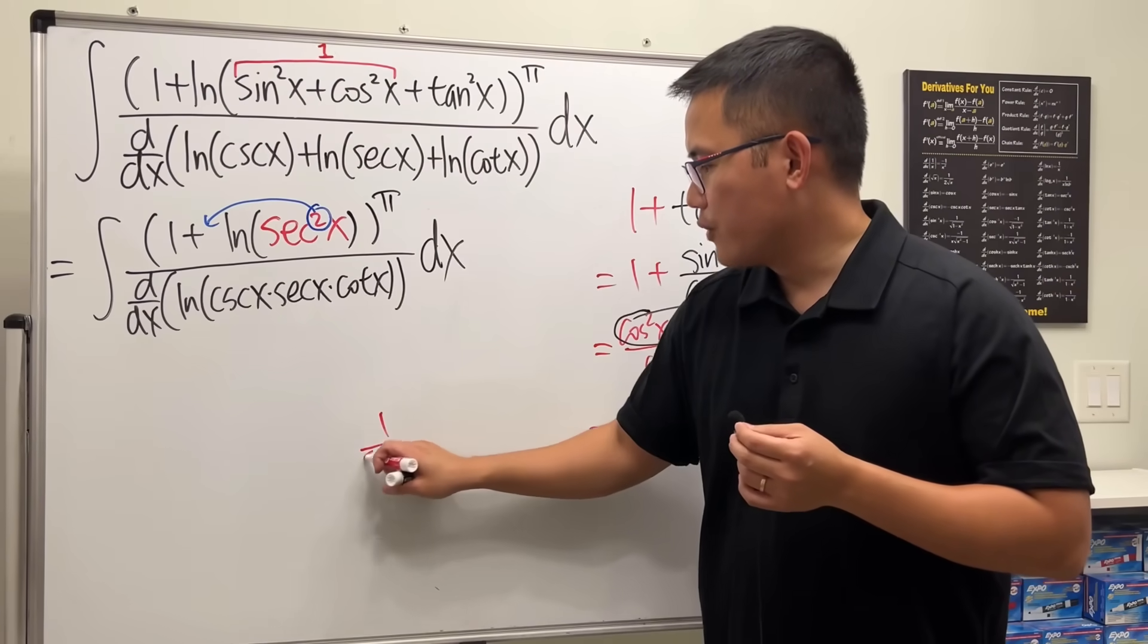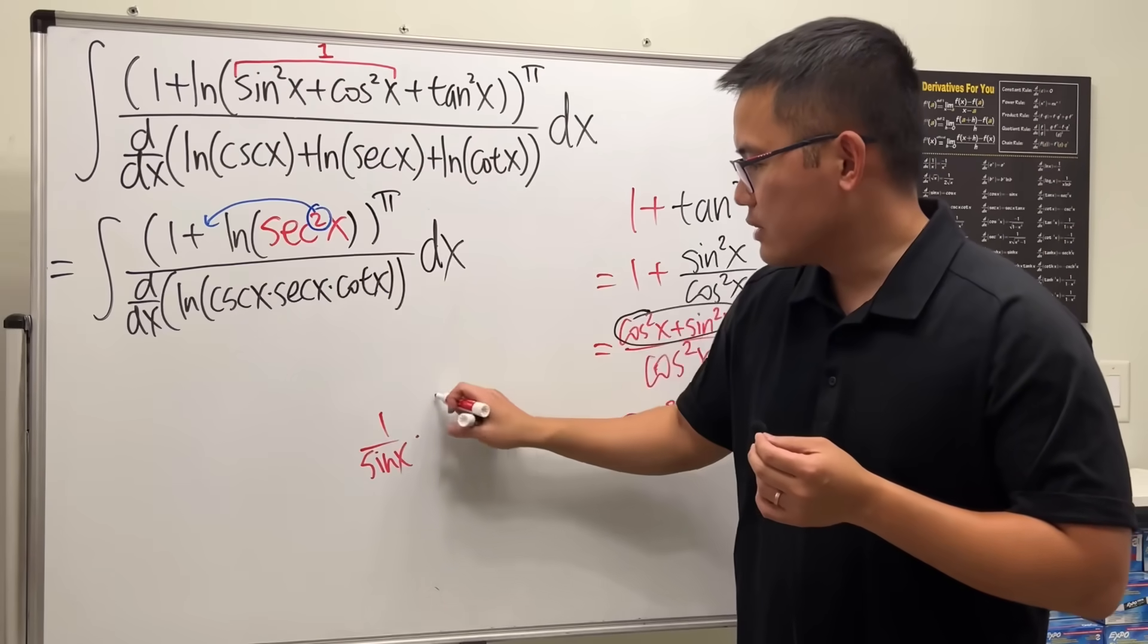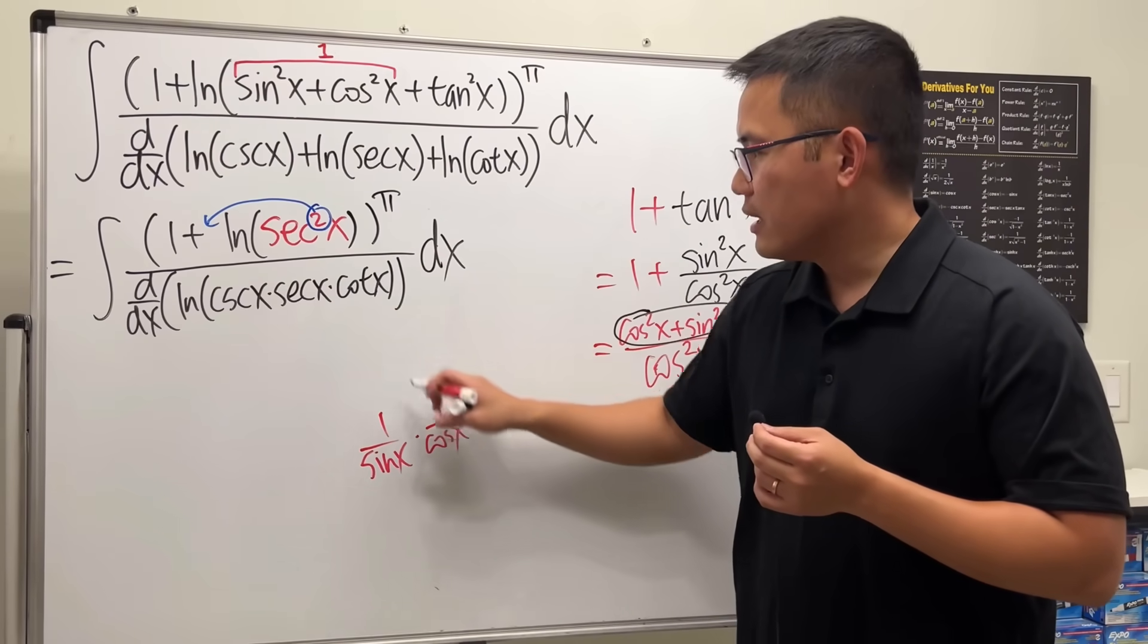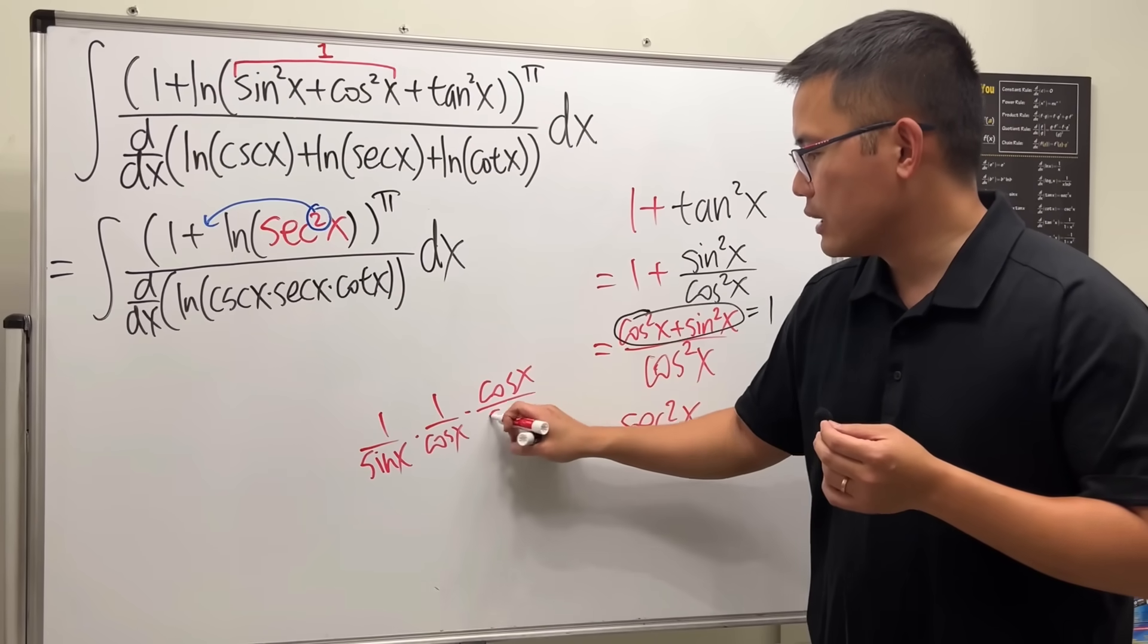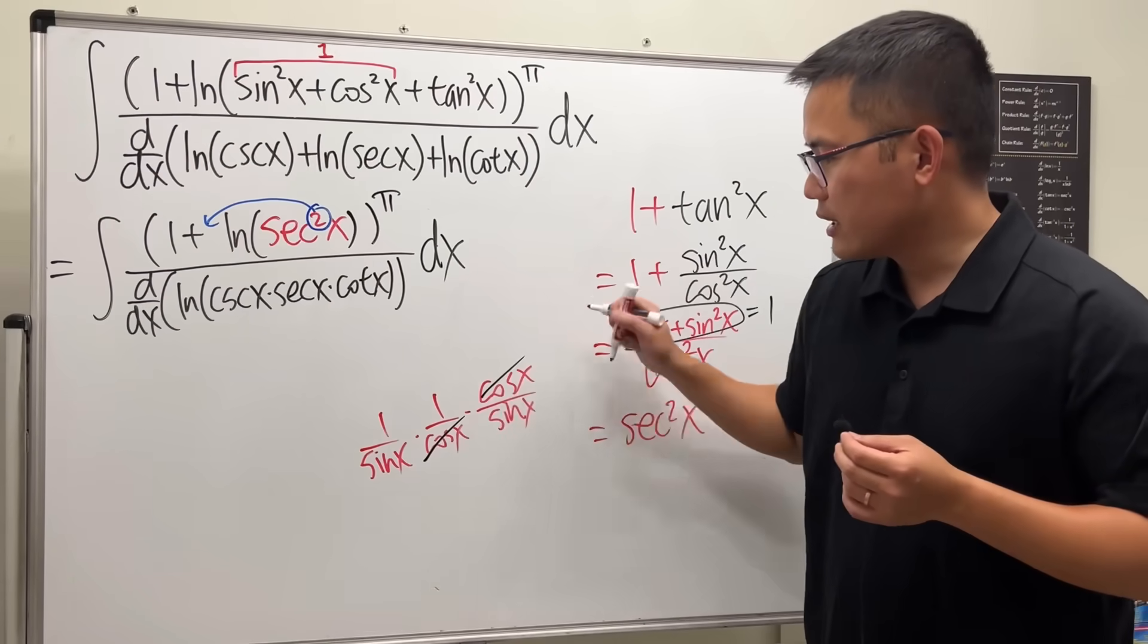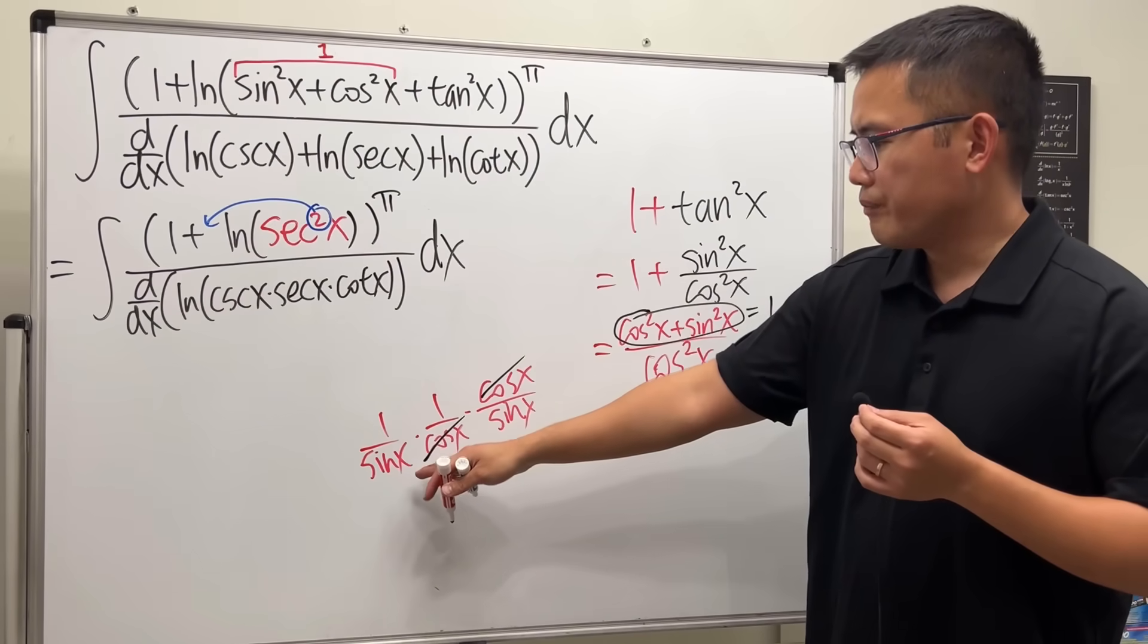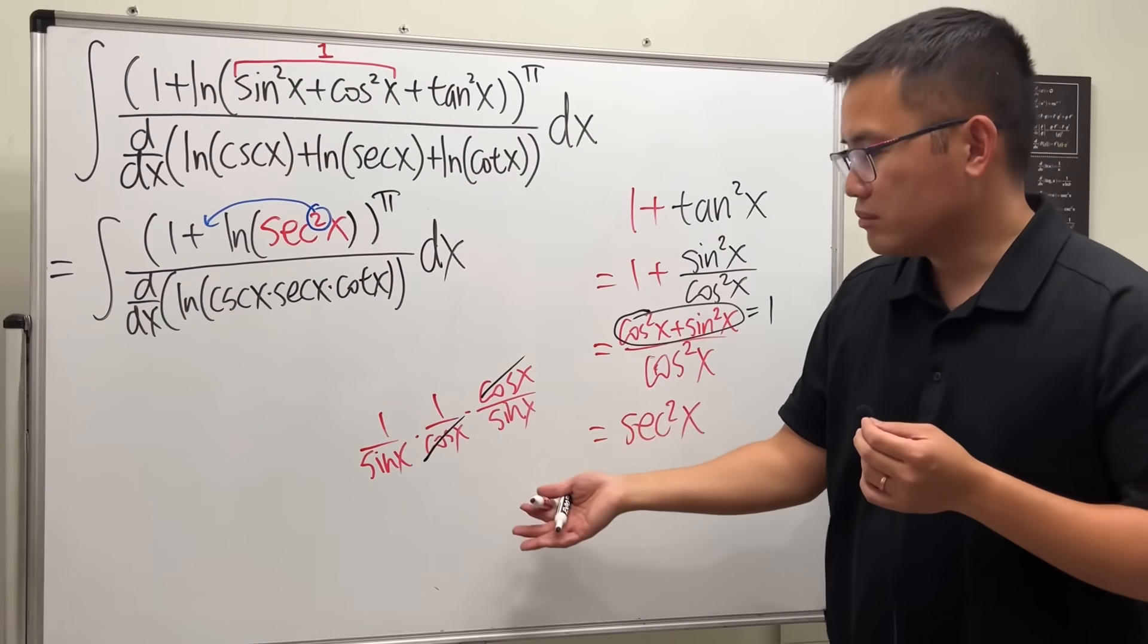This is just 1 over sine for cosecant, and then for secant, it's 1 over cosine, and then this is cosine x over sine x for cotangent. Cosine, cosine, cancel, so really, we just have 1 over sine squared, right?